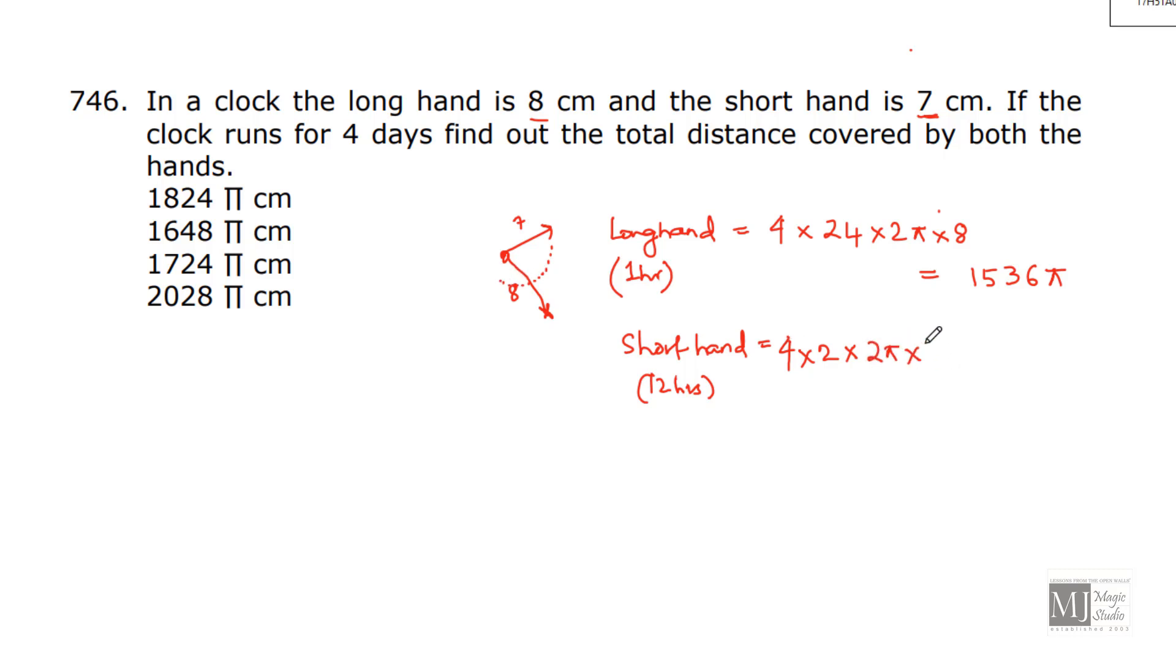Now, 7 into 2 is 14, 14 into 8 is 112. So, the total distance travelled by both the hands of the clock in 4 days would be 1536π plus 112π. 1648π. Option B.